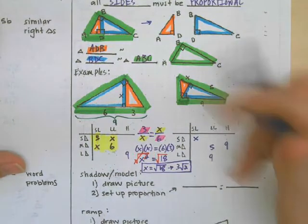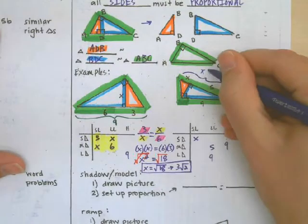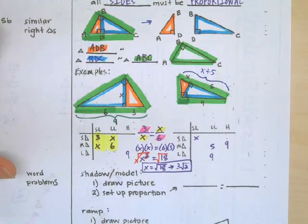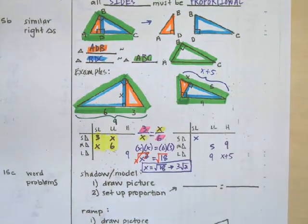And we can add together X plus 5 to represent the hypotenuse. Here we've got the block of 4.